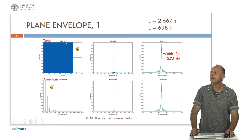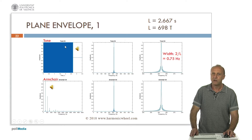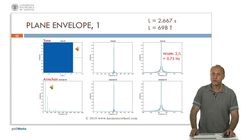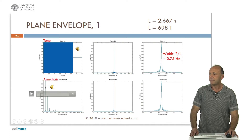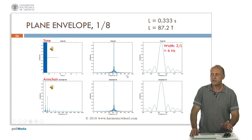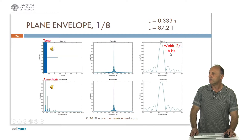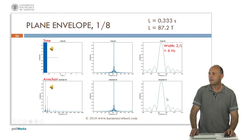So in this case the phase didn't affect the sound, but in other cases it does. Now let's study the effect of the envelope. This is a plain envelope — a whole note for quarter note equal to 90. As we saw, the spectrum is a line whose width is 2 divided by the length, 0.75 Hertz. For the armchair with the same length, we have several lines, each of them equal to the one in the tone. Let's divide the length by 8, so this is an eighth note for a tone. Now the width of the line is 2 divided by the length, which is 6 Hertz. And in the case of the armchair we have several lines, each of them equal to the one in the tone.